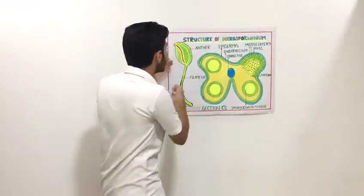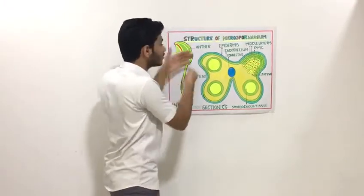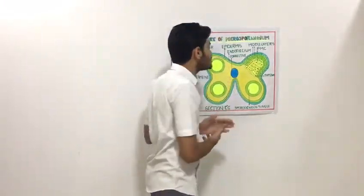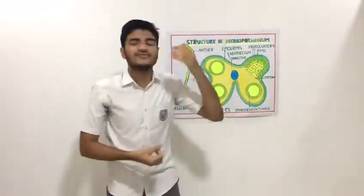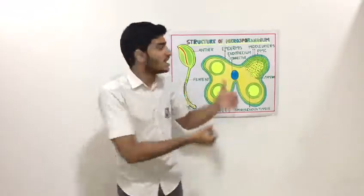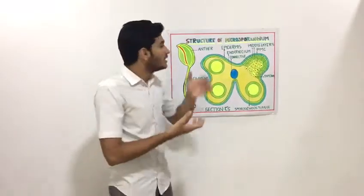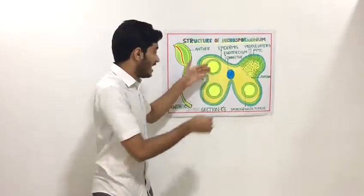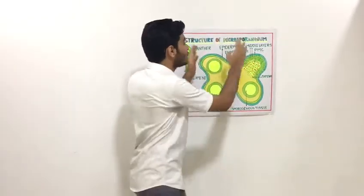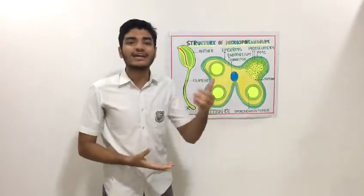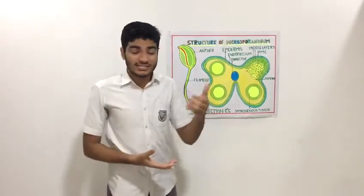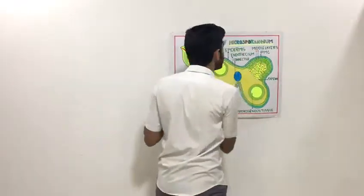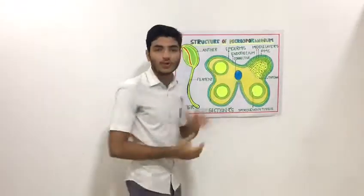Let's look at the transverse section of the anther as shown in this figure. The transverse section of the anther is very distinct from the bilobed structure of the anther. The transverse section of the anther is generally four-sided — that is, a tetragonal figure — and possesses four microsporangia at its four corners.